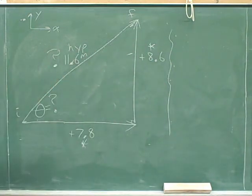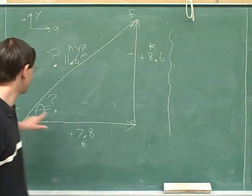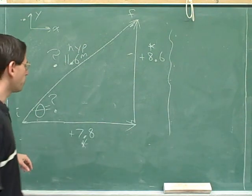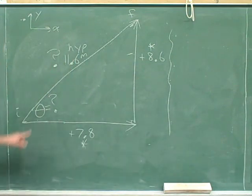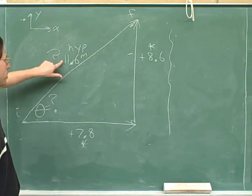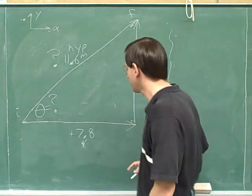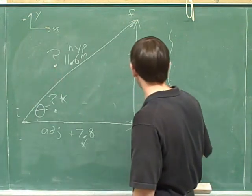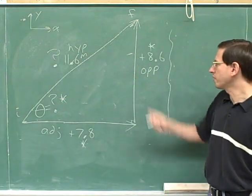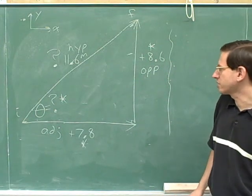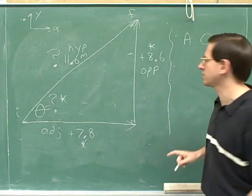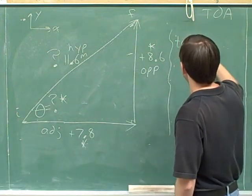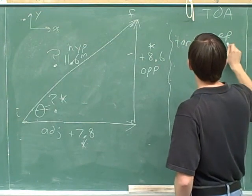We're trying to use these two components to figure out this angle. We're probably not going to use the hypotenuse because that wasn't one of our original numbers — it's more conventional to figure out the angle using the components. This side is the adjacent side for the overall vector and this is the opposite side. We need a trig function that refers to the adjacent and the opposite sides. The tangent refers to the opposite and the adjacent sides, so let's use the tangent function: the tangent of the angle equals the opposite side over the adjacent side.